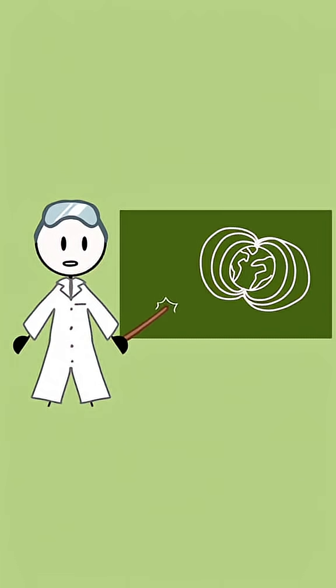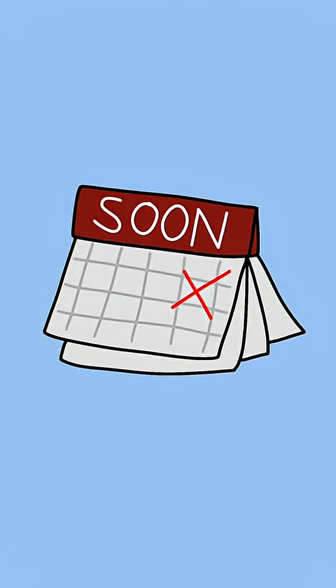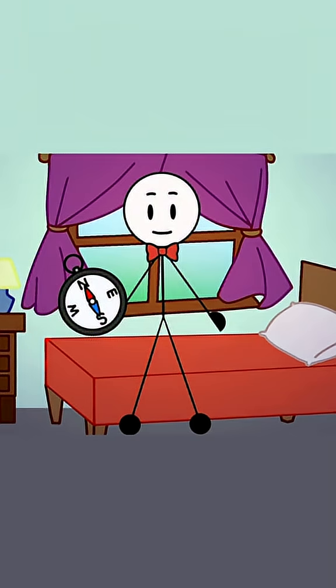This isn't sci-fi. Scientists say the magnetic field has weakened 10% in the last 200 years. A flip may not be tomorrow, but it's coming. So, if your compass ever spins in circles, you'll know why.